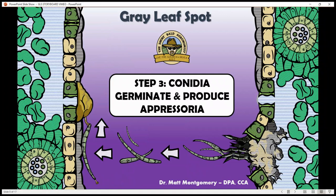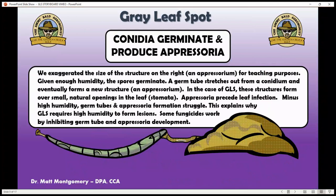After those canidia are released, they land on the leaf — you can see my example on the left. Those canidia then germinate and produce structures called appressoria. When the spore lands, if we have enough moisture, it shoots out a germ tube. If it's dry, that germ tube withers — another reason we need moisture to promote Gray Leaf Spot. Eventually that little germ tube stretches out and grows over the natural openings in the leaf called stomata, those little holes that release water. The appressoria — this little structure — forms over those holes and will penetrate into the leaf itself.